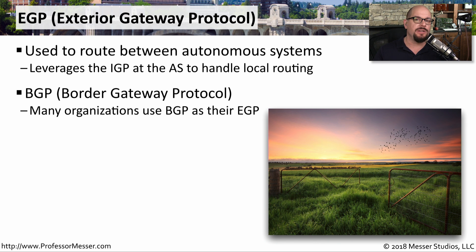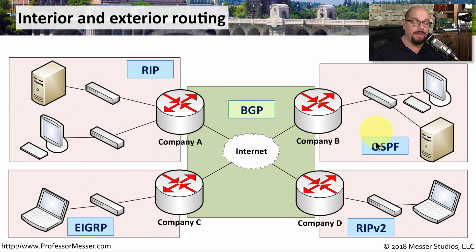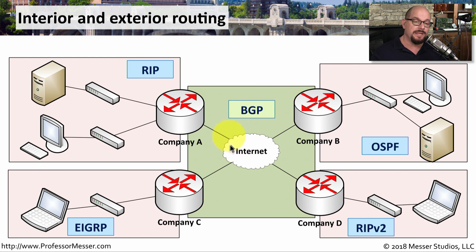If you're connecting to the internet, you're probably using BGP as a dynamic routing protocol to that internet connection. Here's how all of this might fit together. We have four different autonomous systems: one running the RIP routing protocol, one running EIGRP, another running OSPF, and one running RIPv2. To communicate outside of these autonomous systems, we use the Exterior Gateway Protocol of BGP. This means that we can have an internet connection, and all of these devices can route from one side to the other using this BGP protocol.